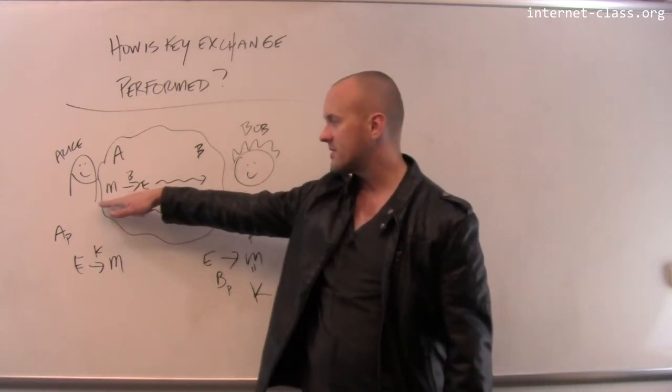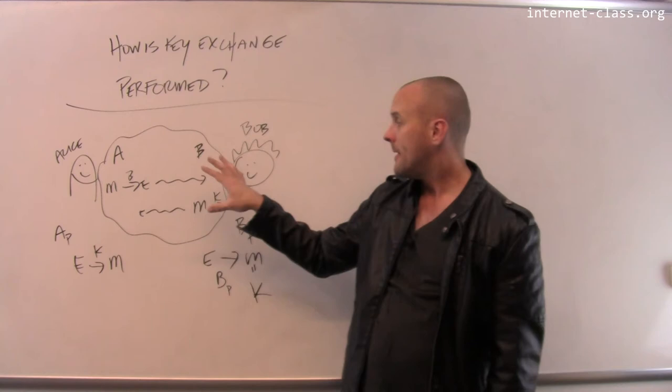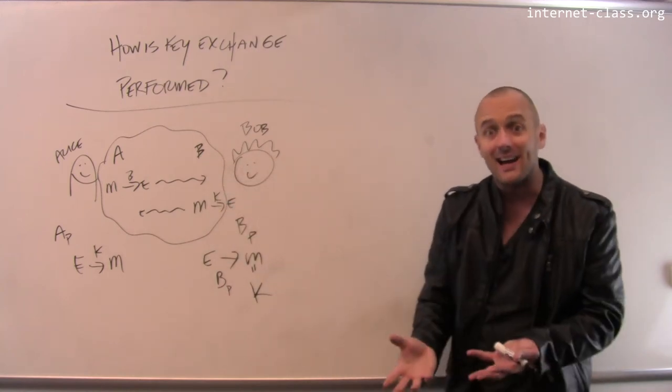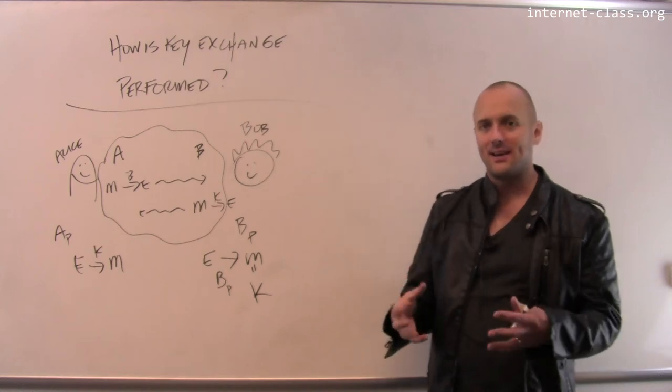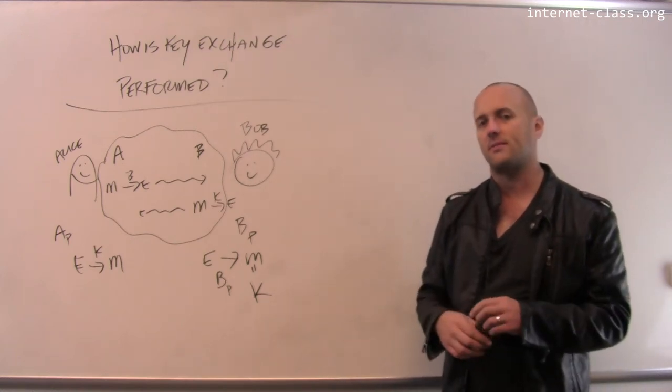One way of doing it is the first message I send, I encrypt using Bob's public key, and Bob decrypts it using his private key, and then discovers inside that what Alice has sent is a message saying essentially, let's use this symmetric key for the rest of our conversation.